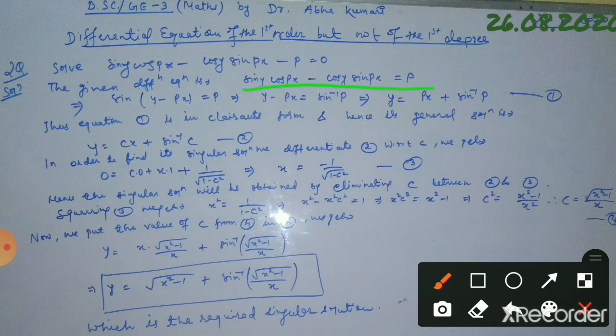This implies y minus px equals sin⁻¹(p), and this implies y equals px plus sin⁻¹(p). So in equation number 1, what we see is y standing alone on the left-hand side, while the right-hand side has a multiple of p and x, followed by a function of p alone. This means this differential equation is of the form of Clairaut's equation.